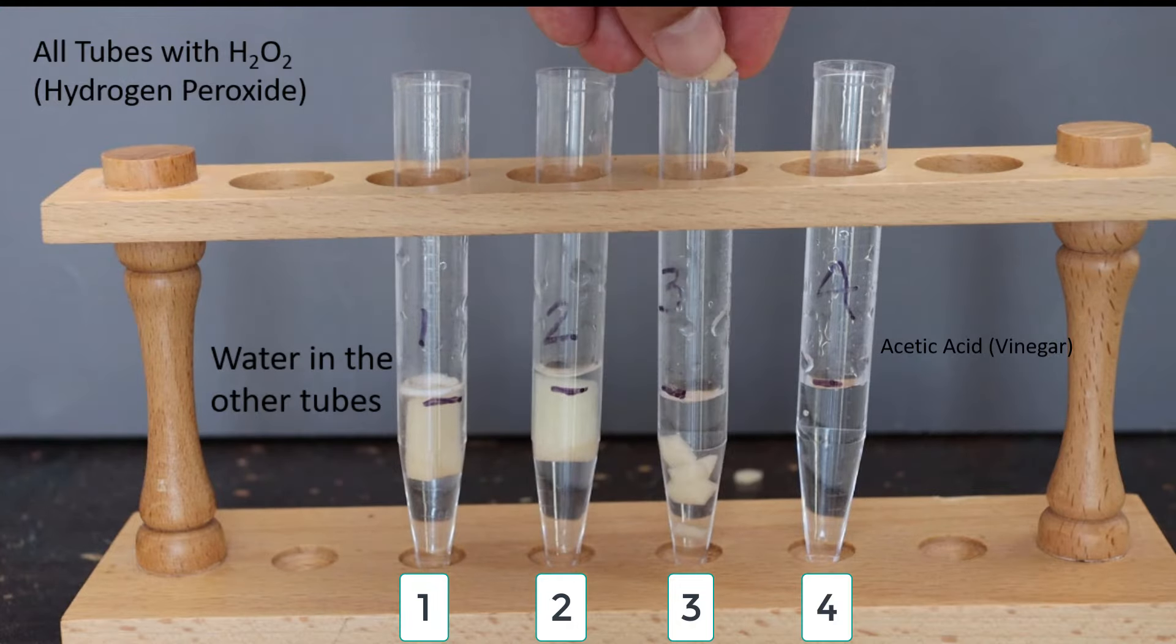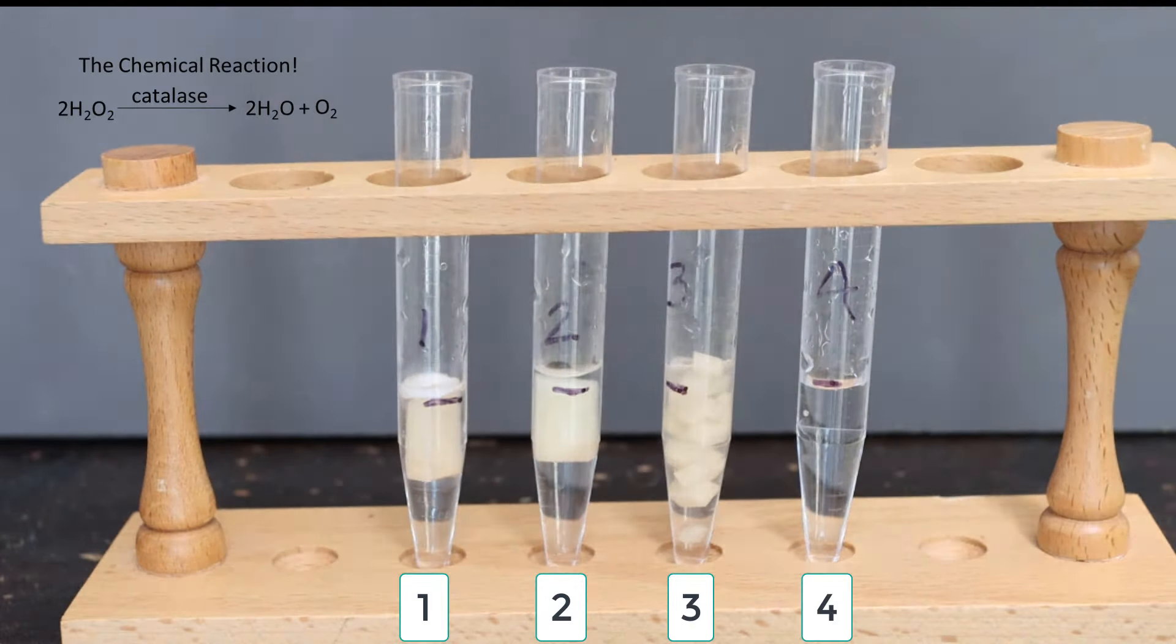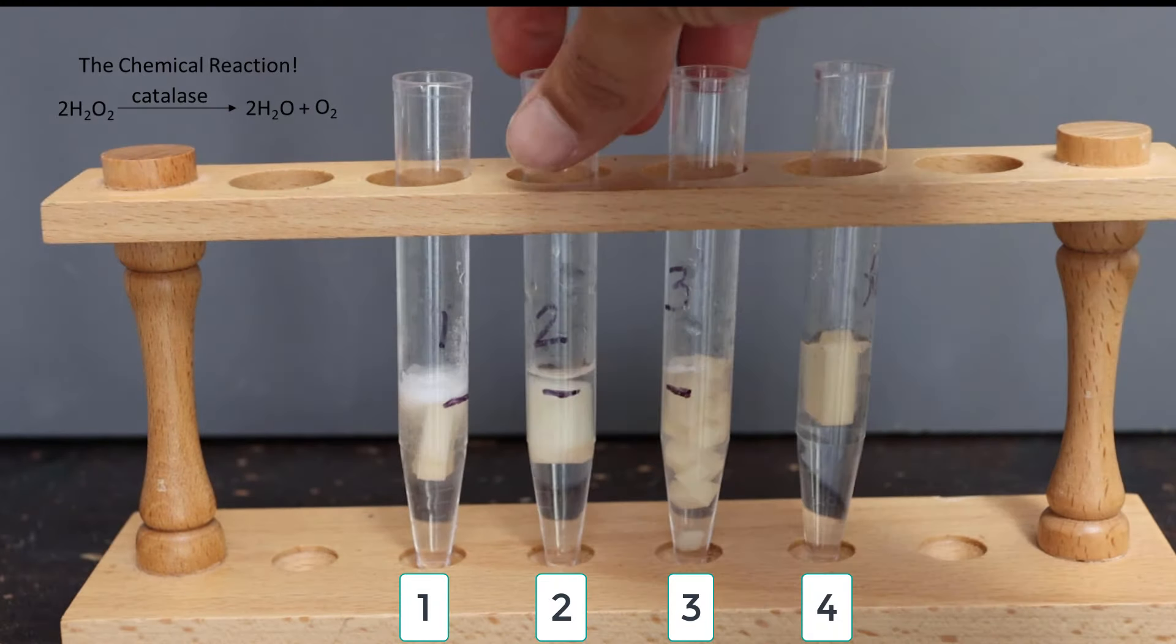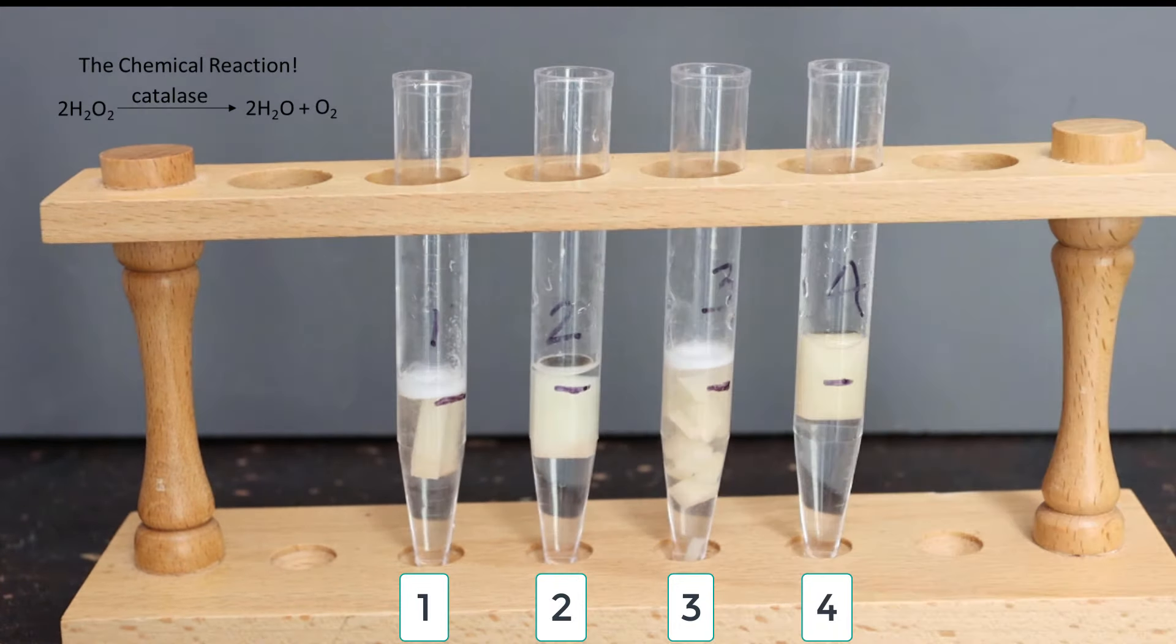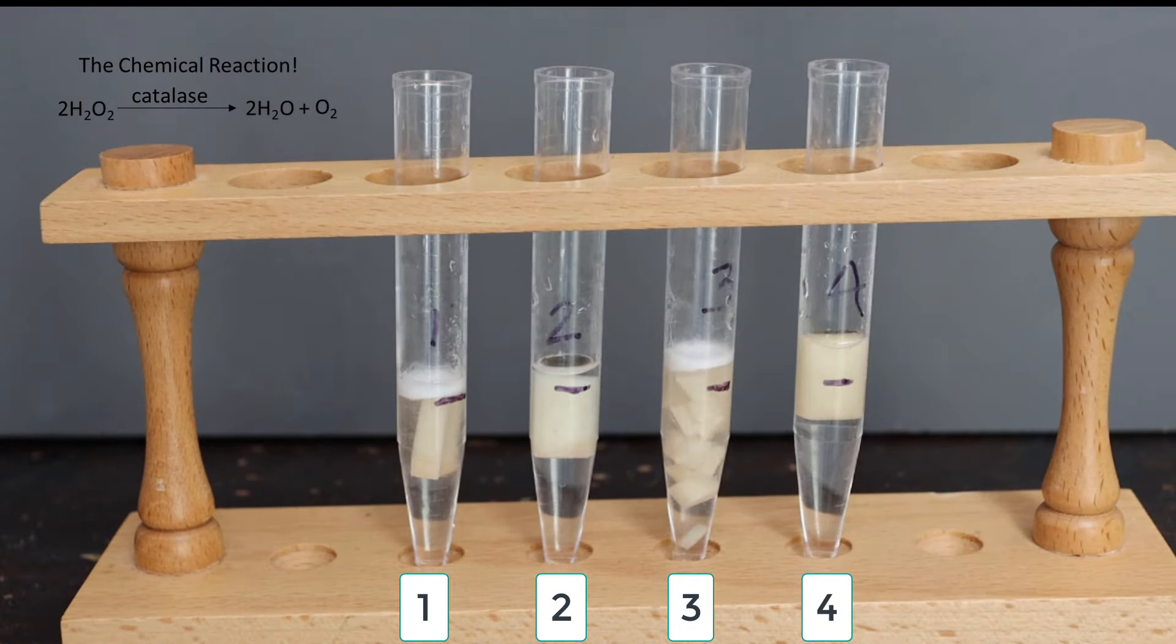Then we put our potatoes in. We have test tube one with a regular potato, test tube two with the one we boiled, test tube three has the potato we chopped up, and test tube four has normal potato but with acetic acid.